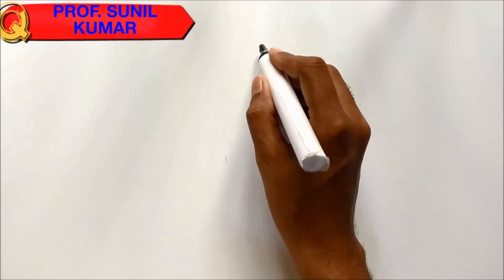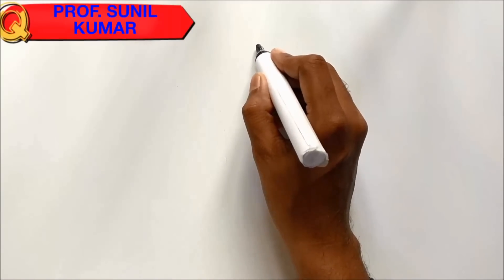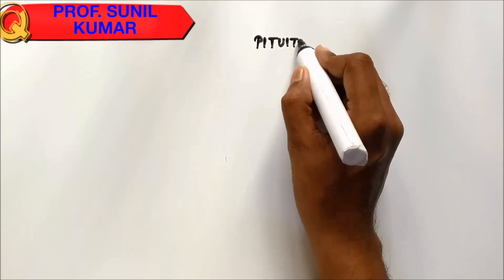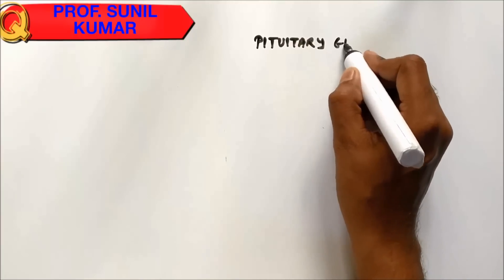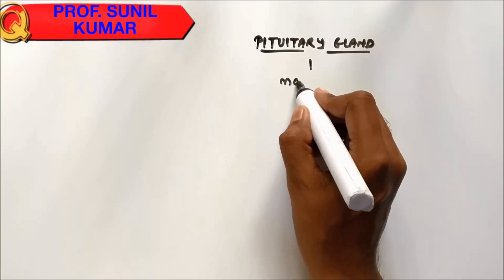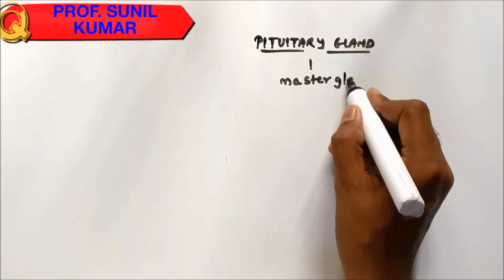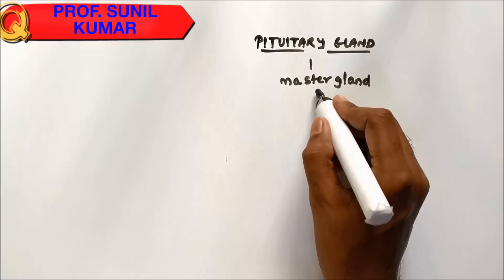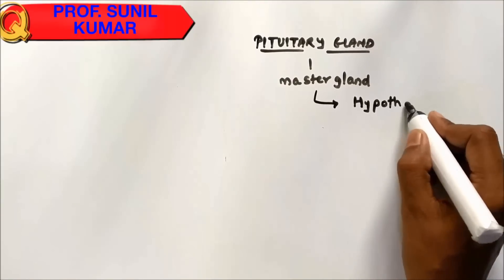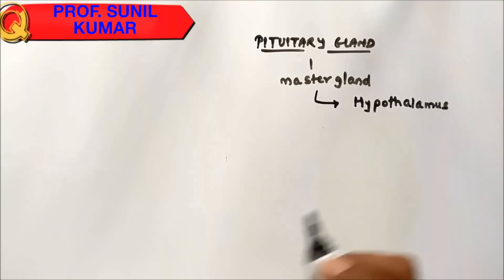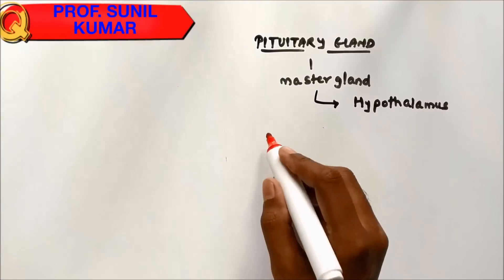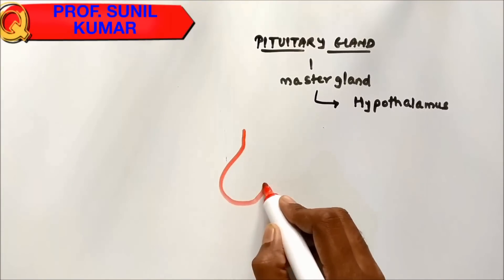Hello friends, today we are going to study the pituitary gland. The pituitary gland is also called the master gland. Even though it is called the master gland, it is still under the control of the hypothalamus.